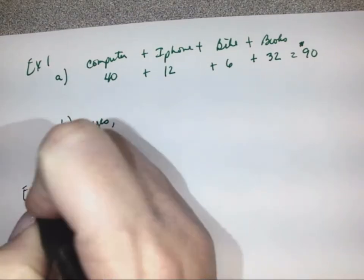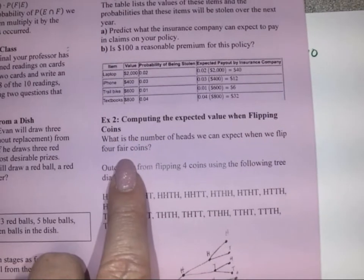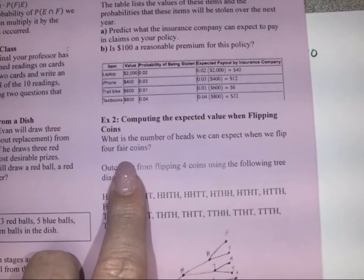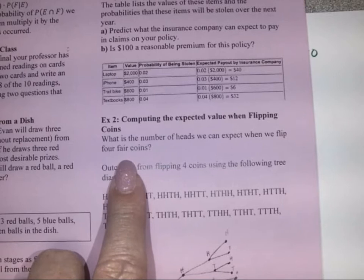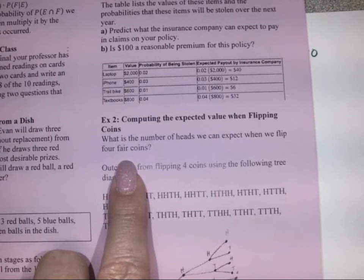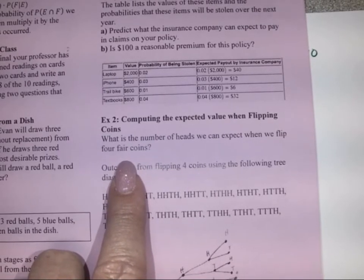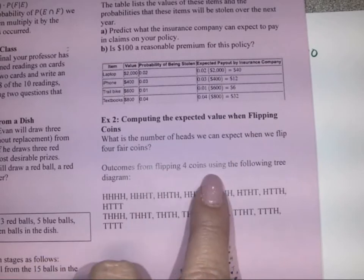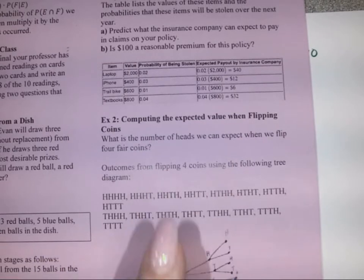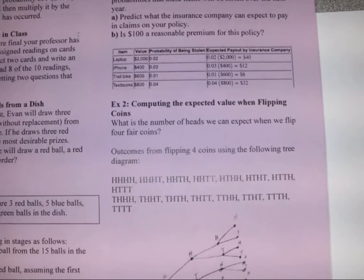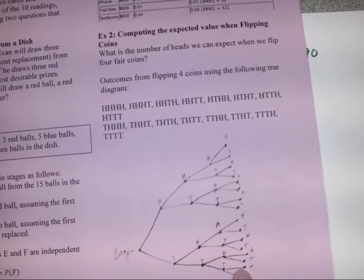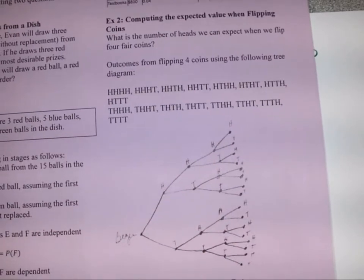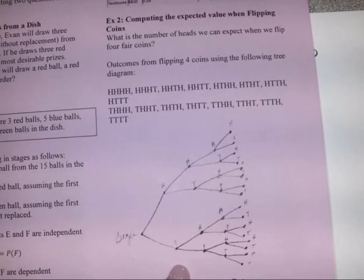Let's look at example two: computing the expected value when flipping coins. What is the number of heads we can expect when we flip four fair coins? Fair coins means they're not altered in any way and flip both ways equally. To find the outcomes from flipping four coins, we can use a tree diagram.